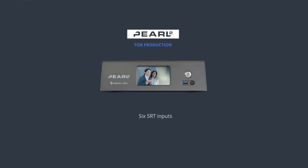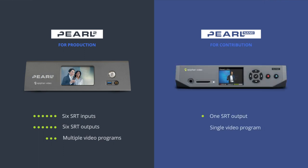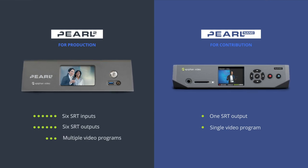Where they differ is in their feature sets. Pearl 2 would make an excellent production encoder for live events with multiple remote guests. At the other end, Pearl Nano is an ideal contribution encoder because it's compact and lightweight. That makes it more cost-effective to ship to remote guests, and with Pearl Nano being so easy to use, your guests will have no trouble setting it up with minimal instruction.